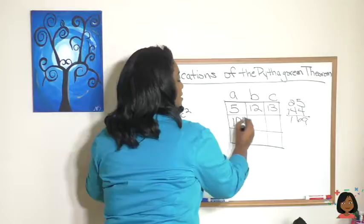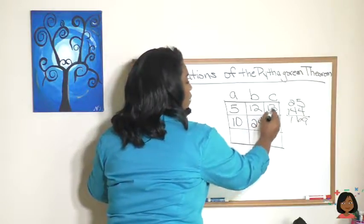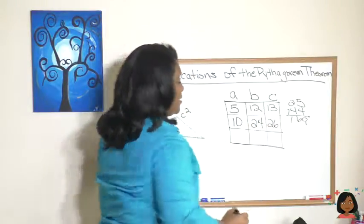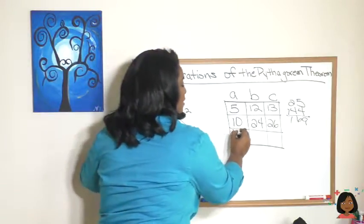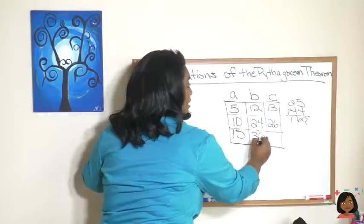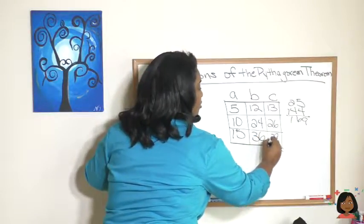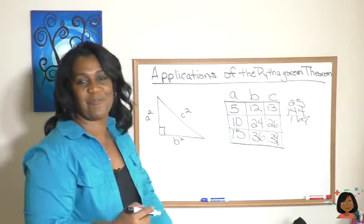So let's do a few multiples of this so you can get familiar with those numbers. So if you see 10, 24, 26, you should know that that's a Pythagorean triplet. Let's try another multiple. Let's do 15, 36, and 39. That's another one.